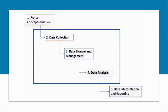Here we see our information chain in the context of the wider M&E activities. Step one, before the information chain actually starts, is project conceptualization — where we ask pertinent questions such as: What are we going to measure? How are we going to measure it? What are we trying to achieve with collecting the data? It's where we determine what our indicators are and what our monitoring plan is.